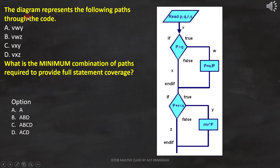Here the question is, the diagram represents the following paths through the code. What is the minimum combination of paths required to provide full statement coverage?